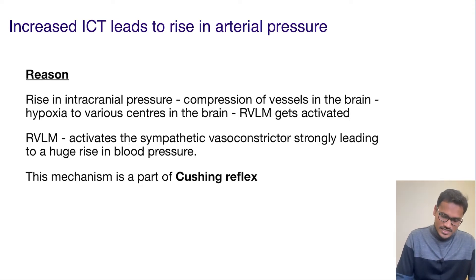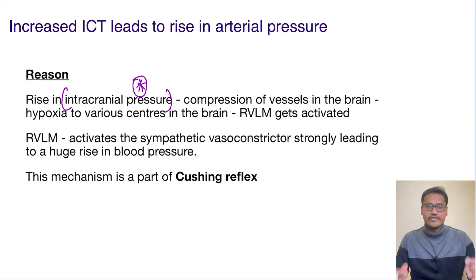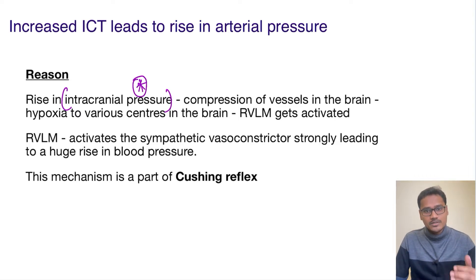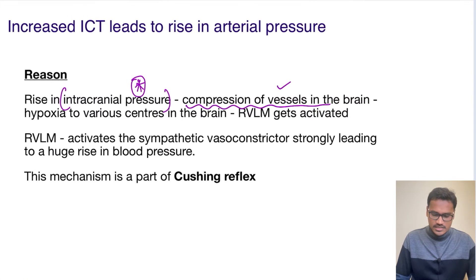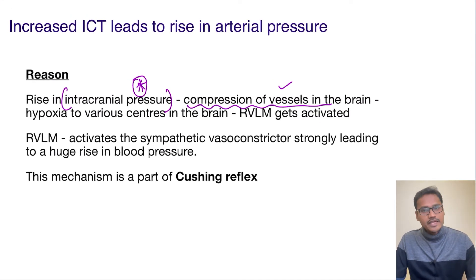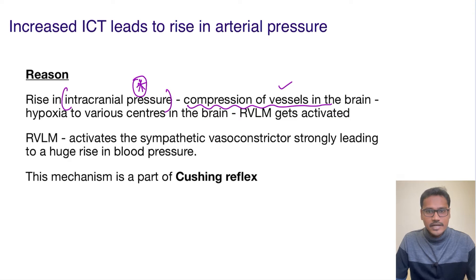Whenever there is a raised intracranial pressure — let's think there is severe pressure in the brain — what will happen to the vessels inside the brain? Obviously they will get compressed. So there is severe compression of the vessels in the brain, and this compression will lead on to hypoxia in various centers of the brain.